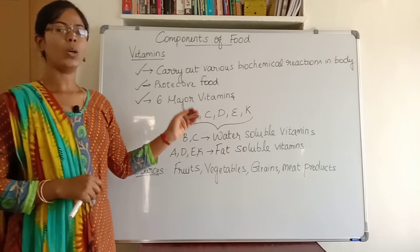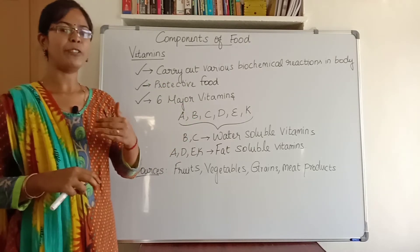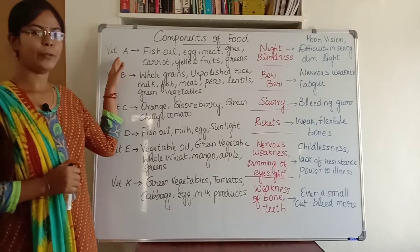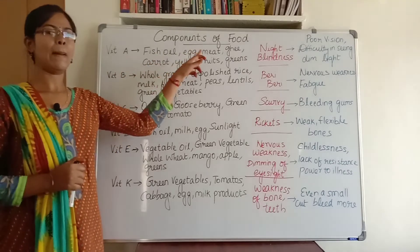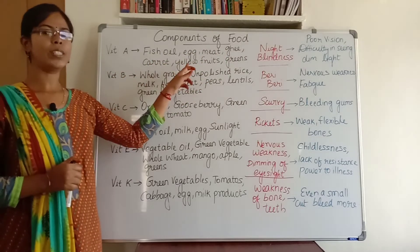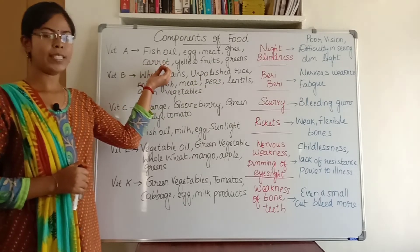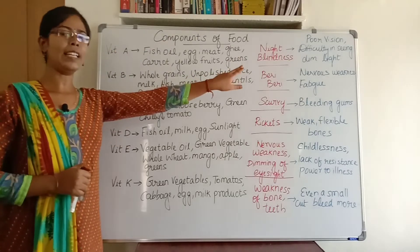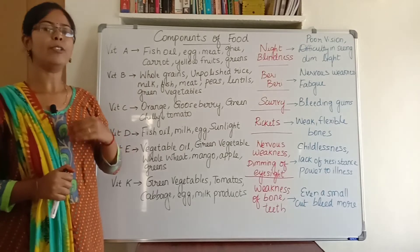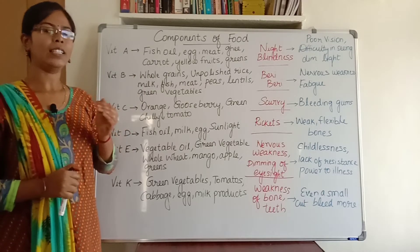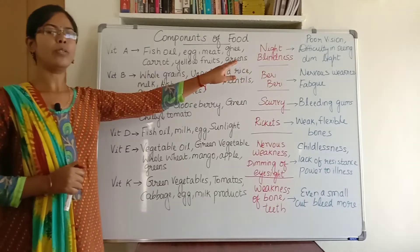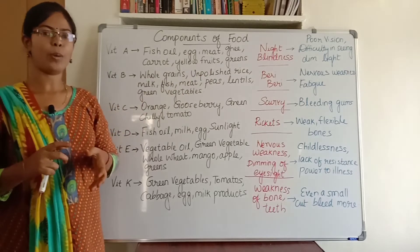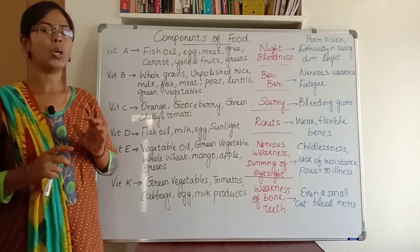Now let us see the types of vitamins, their sources in food, and what deficiency diseases we get if we don't eat those foods. Vitamin A is present in foods like fish oil, egg, meat, ghee, carrot, yellow fruits, and greens. If we don't eat these foods, we will be deficient in vitamin A and get a deficiency disease called night blindness. Night blindness means we cannot see after sunset, and its symptoms are poor vision and difficulty seeing in dim light.